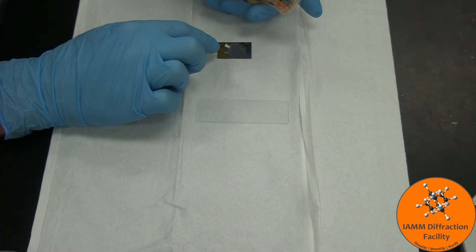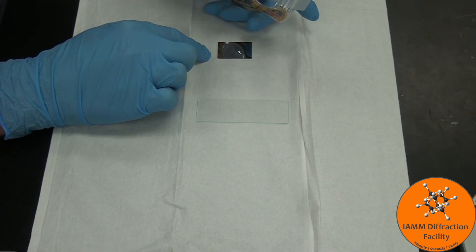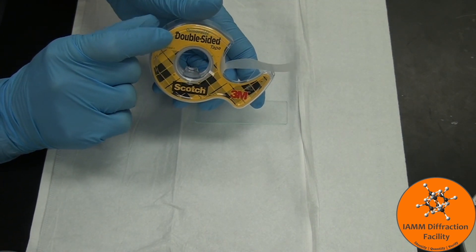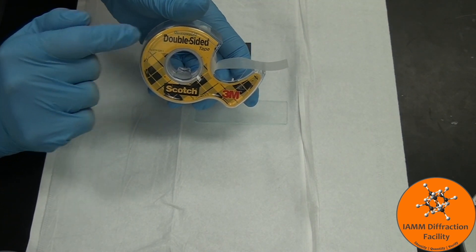When I'm preparing a piece of tape for my sample, I want to make sure that the tape is smaller than the sample because this removable double-sided tape does create diffraction peaks if the x-ray beam hits it.